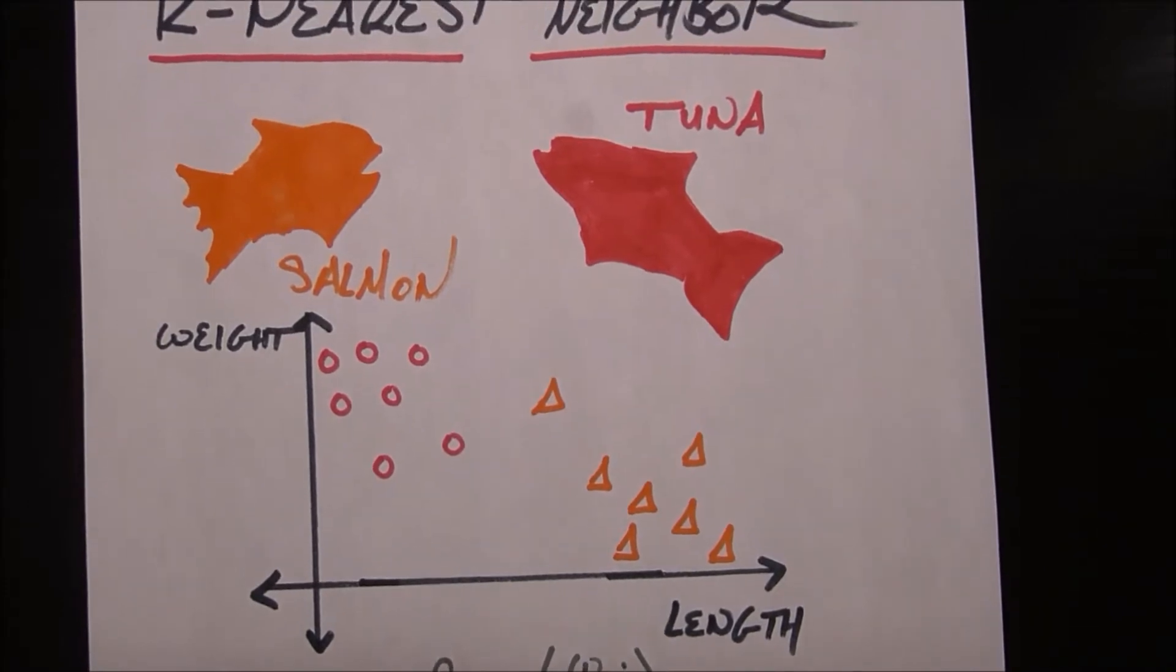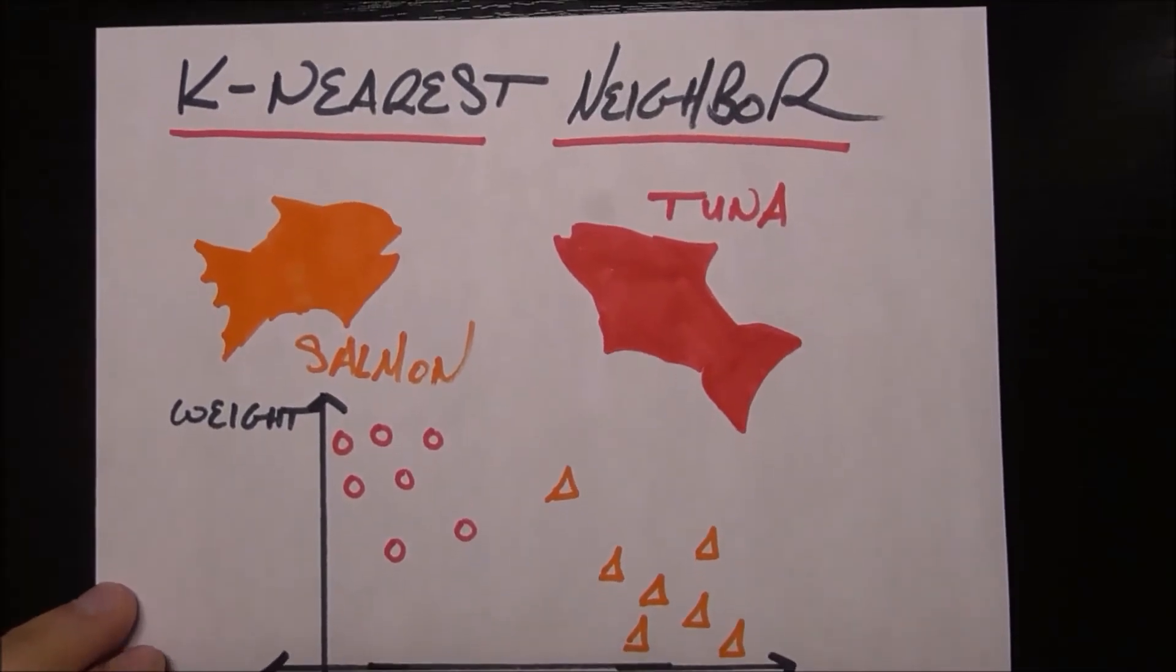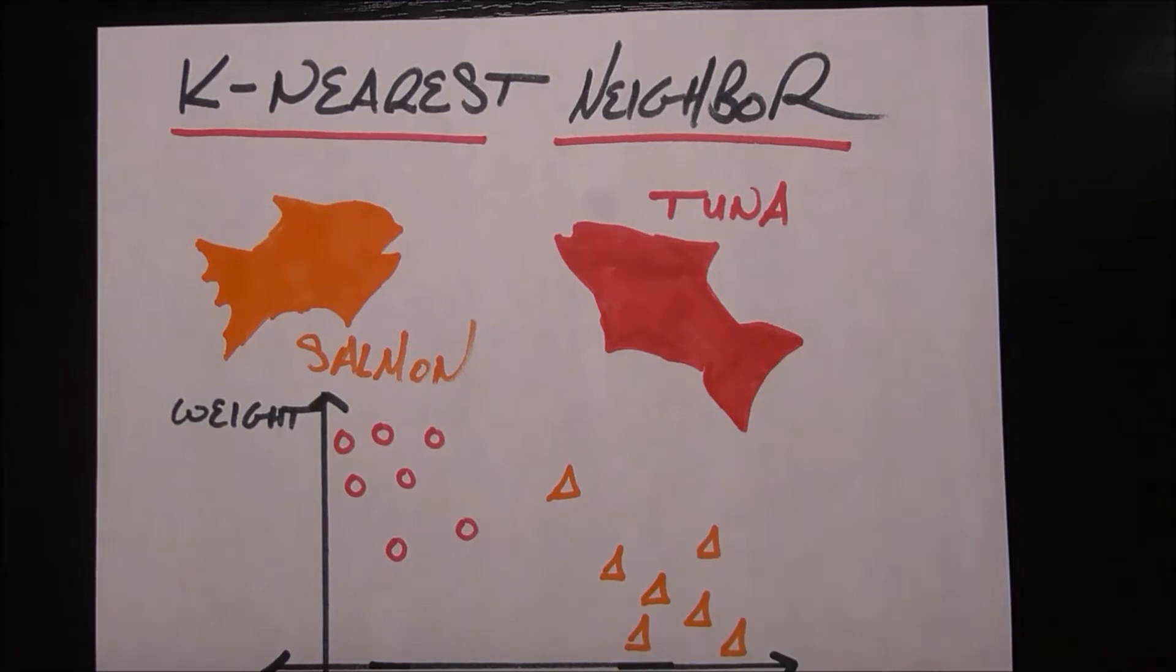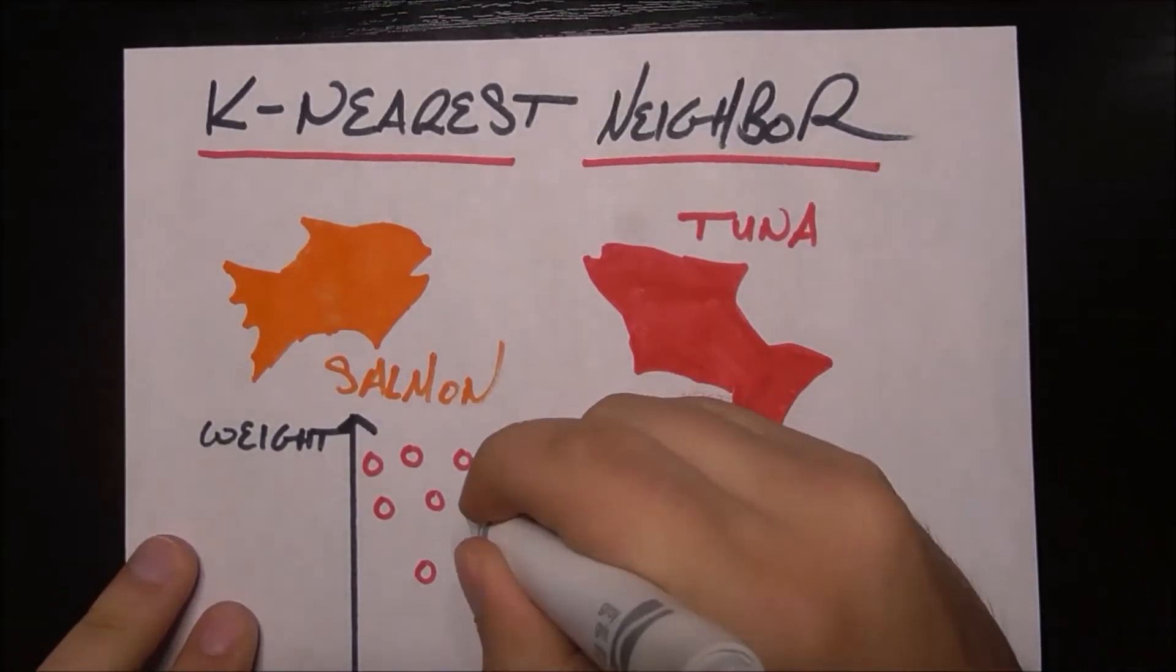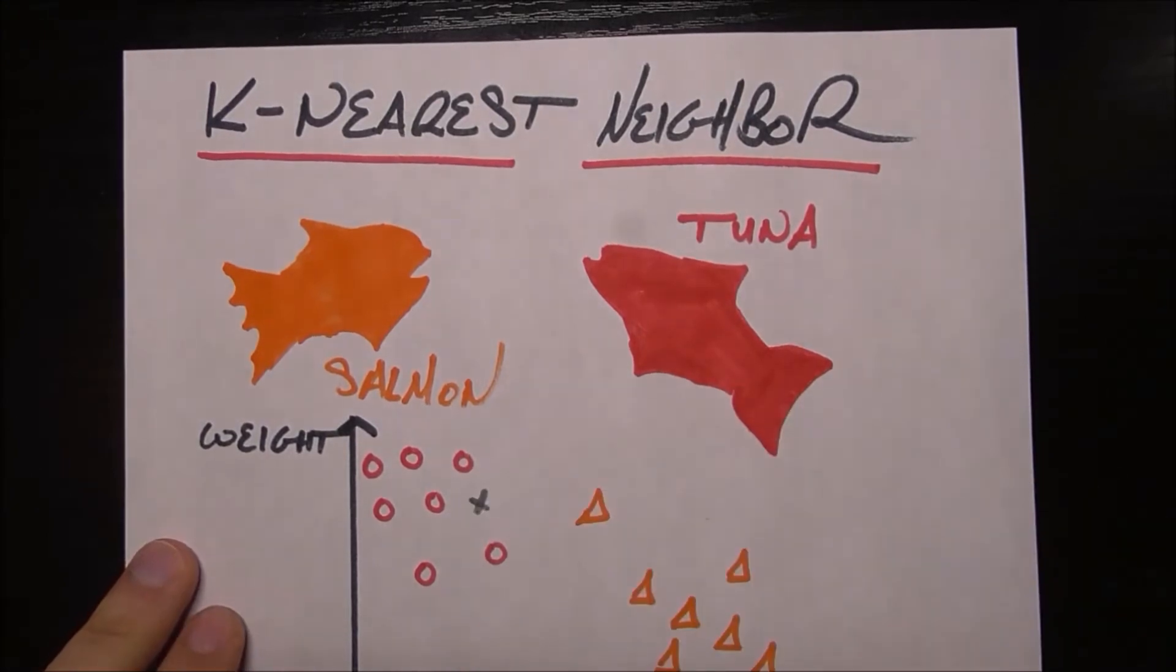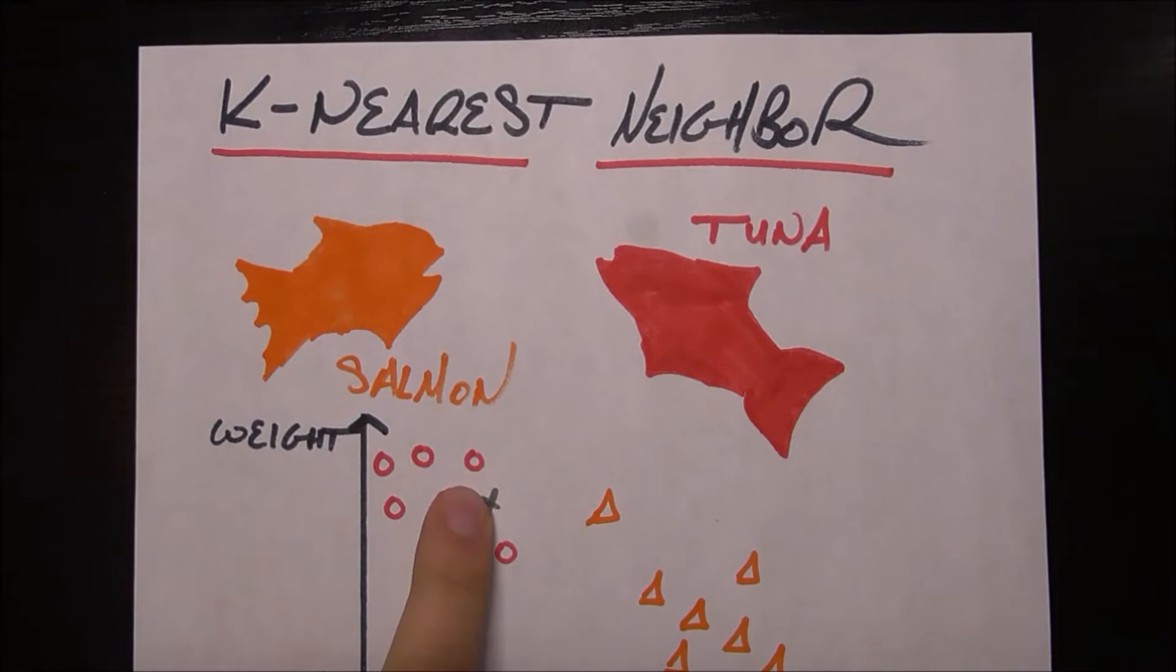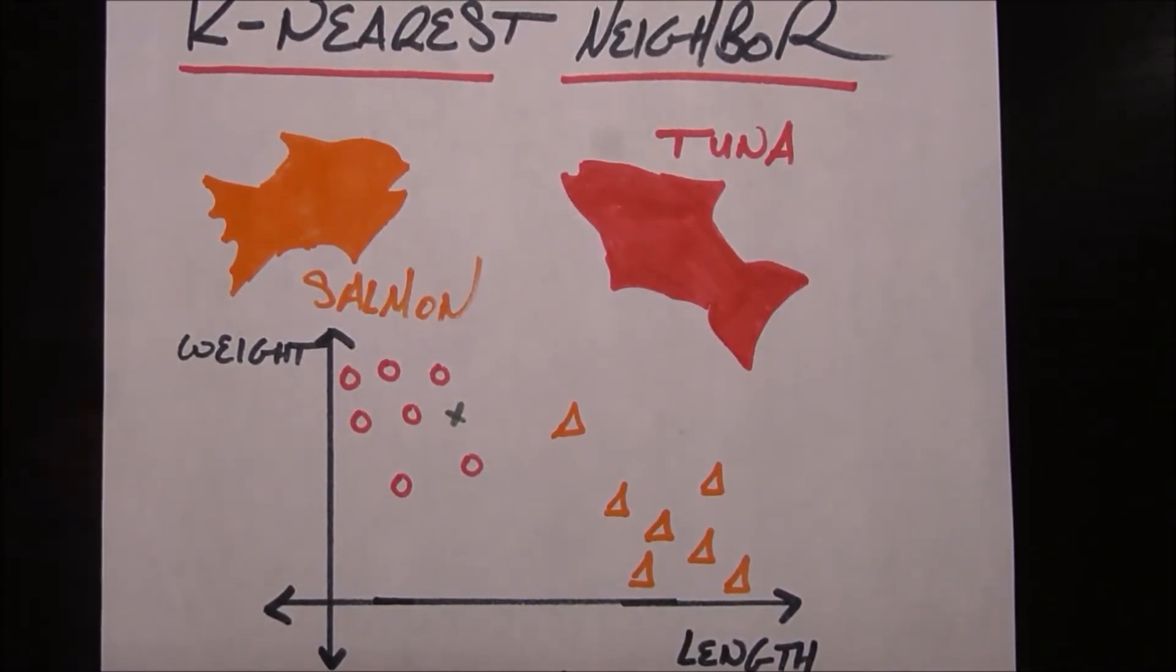With k-nearest neighbor, let me show you visually first before we go into the math because that really helps to solidify things. If we have a mystery fish, I'm going to represent that with a gray x. If I said here's a mystery fish with that length and that weight, would you probably say it's a tuna or a salmon? You'd probably say it's a tuna because it's literally close to other tuna.